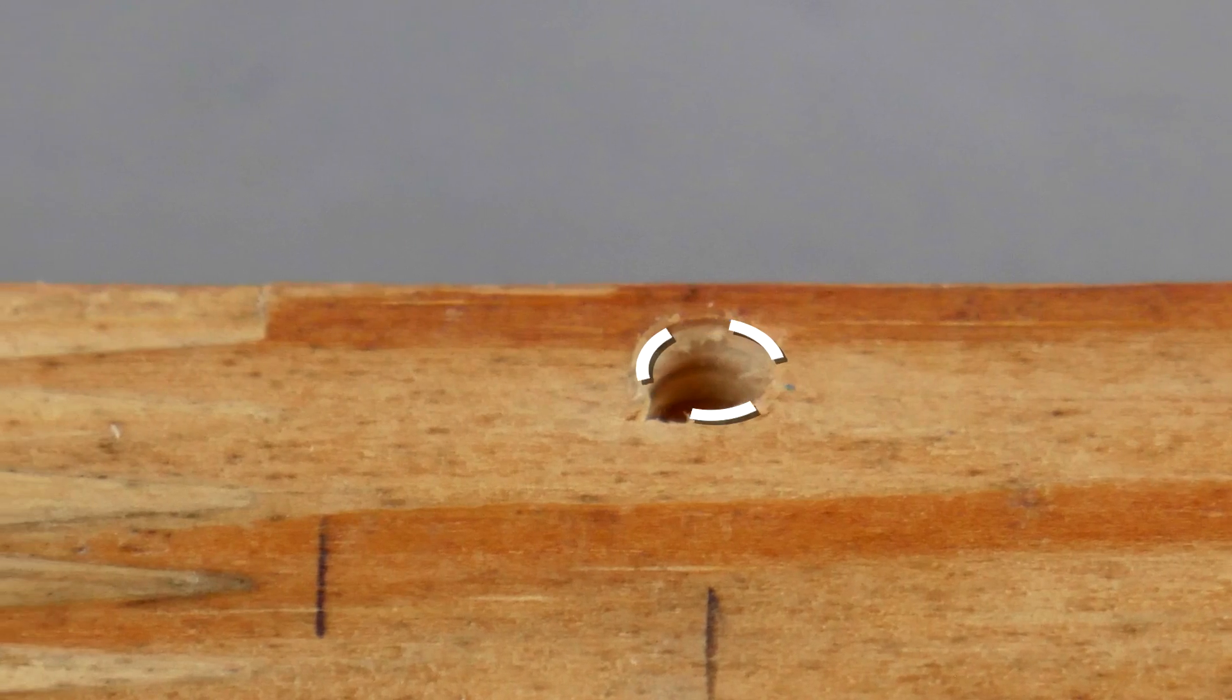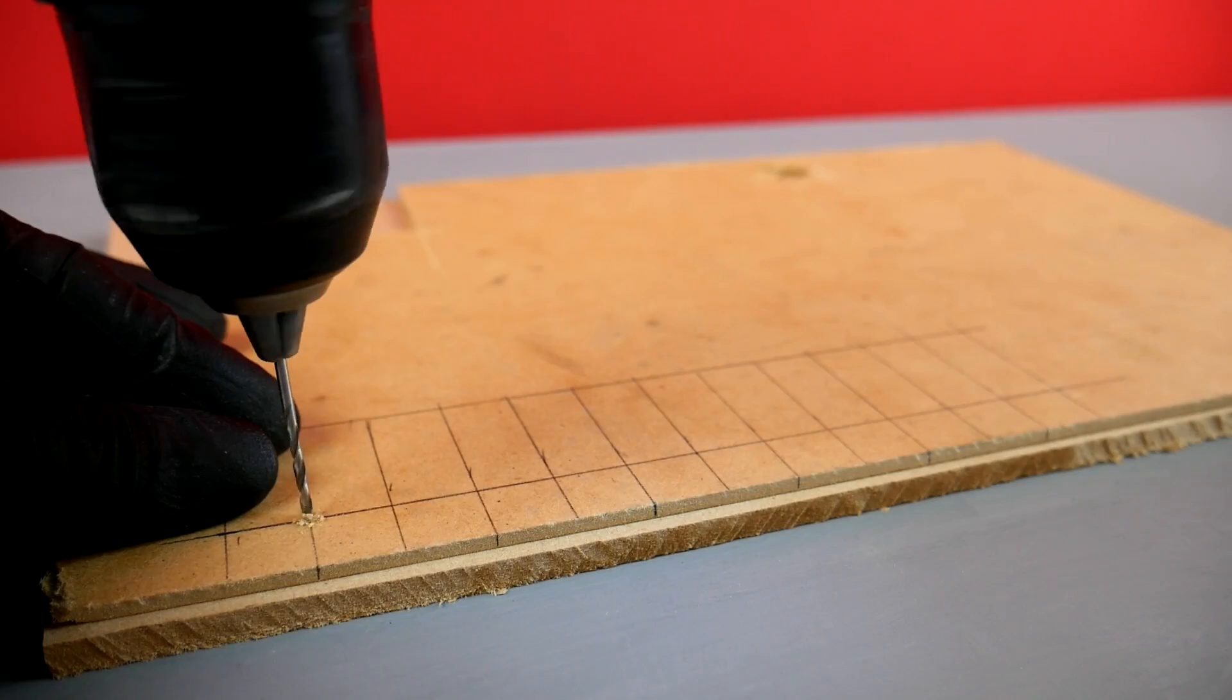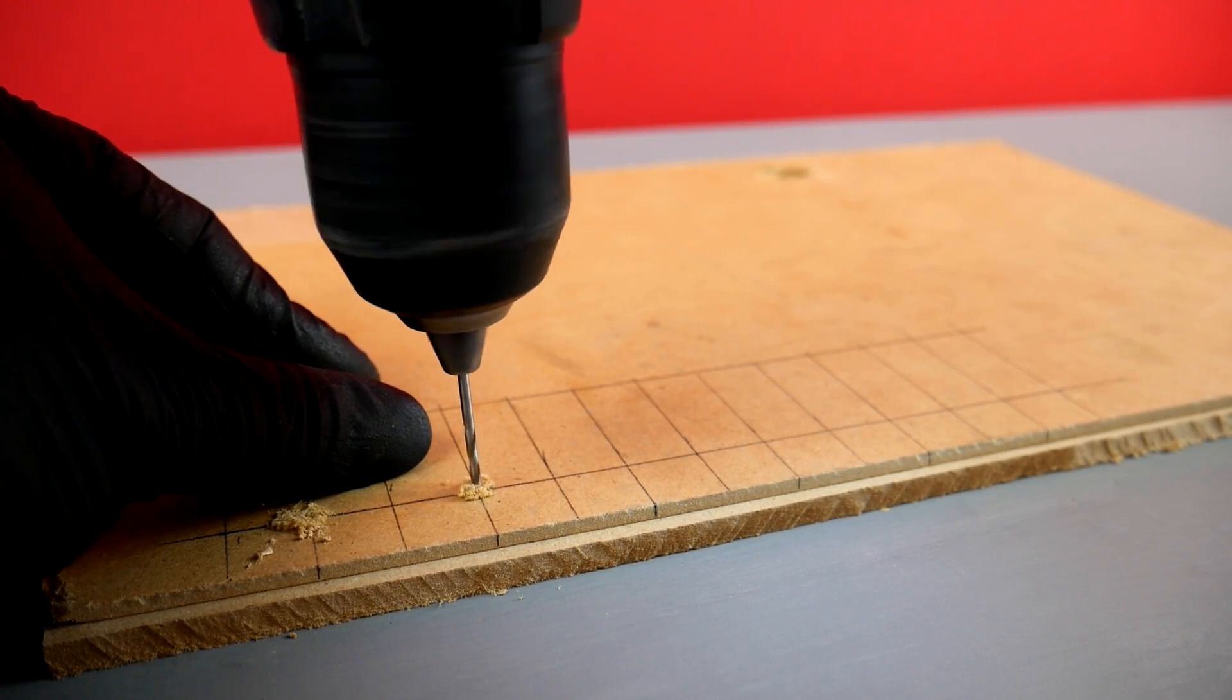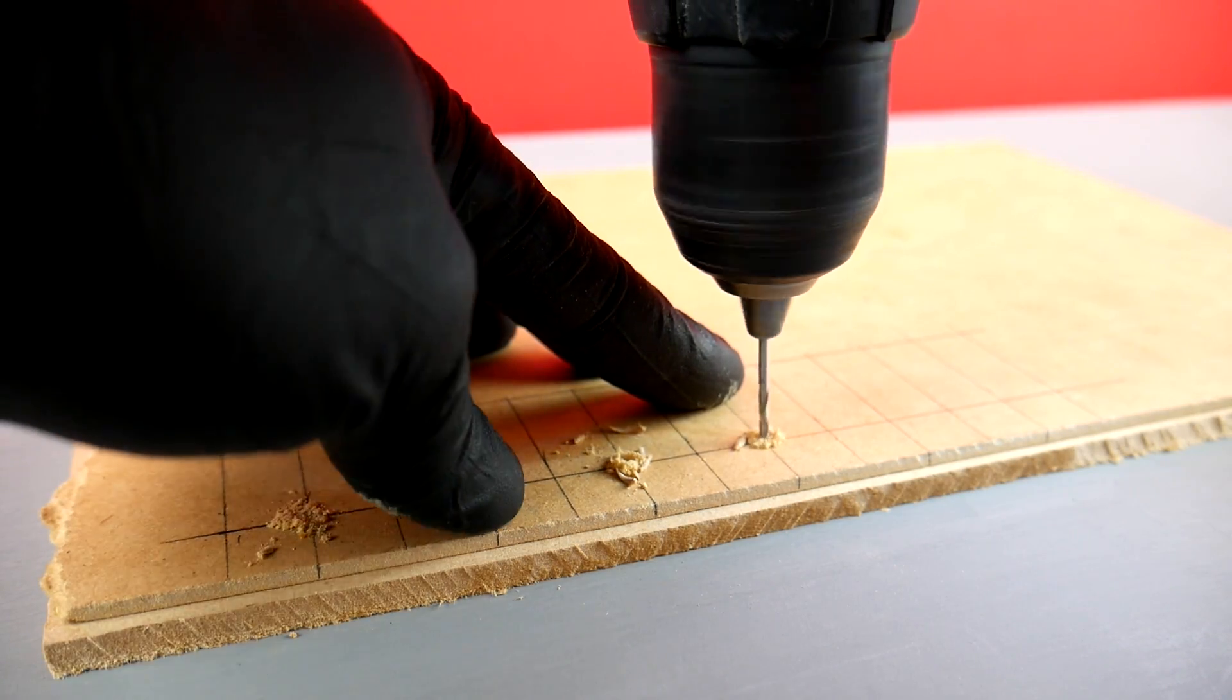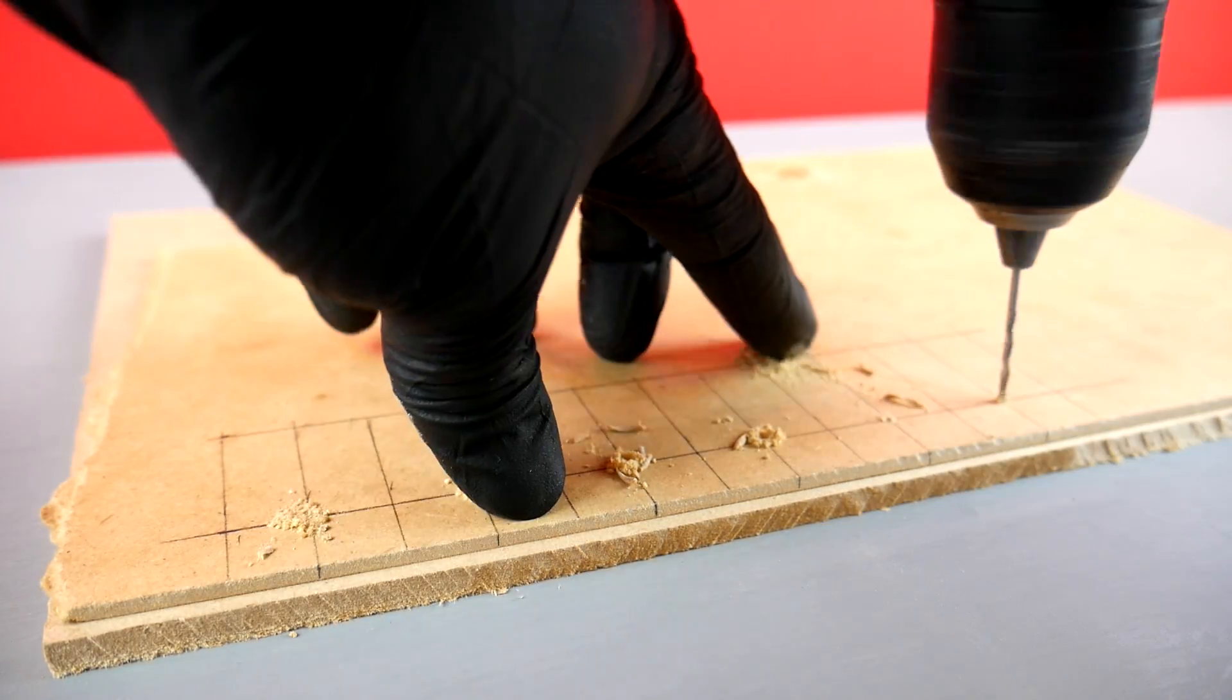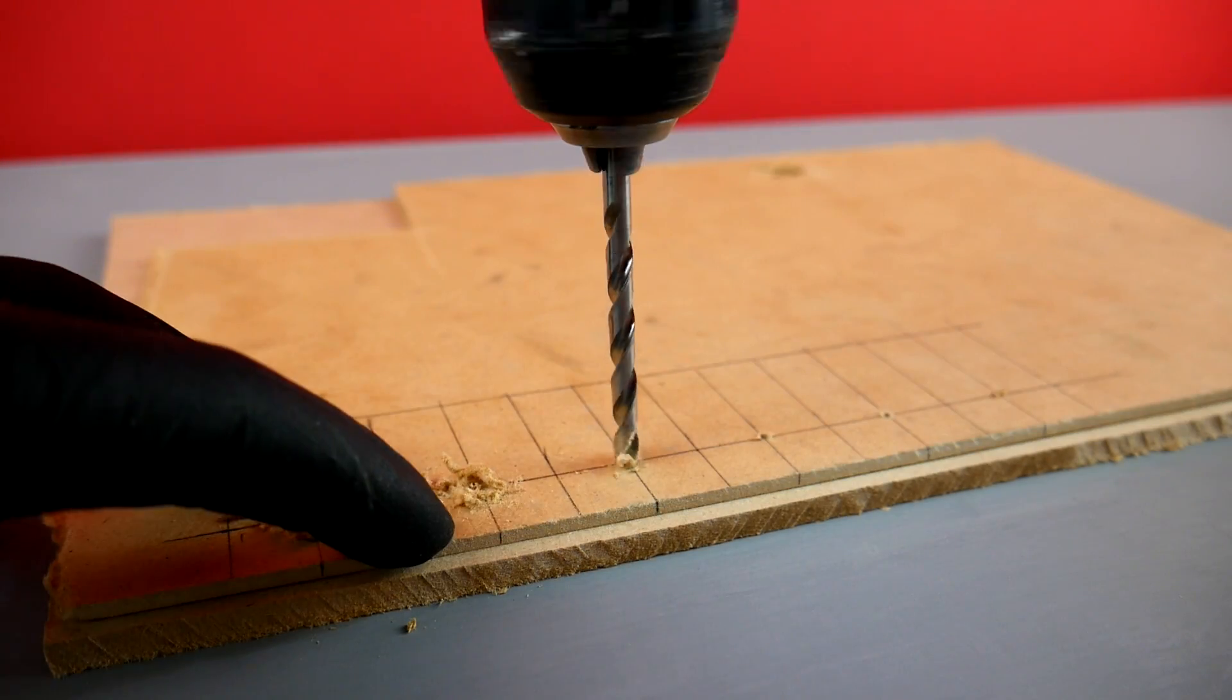Now I want the hole in my finished material to be 5 millimeters. So I'm first going to drill a smaller guide hole on each of the intersects where the lines continued over the edge. Then I drill with the 5 millimeter bit.